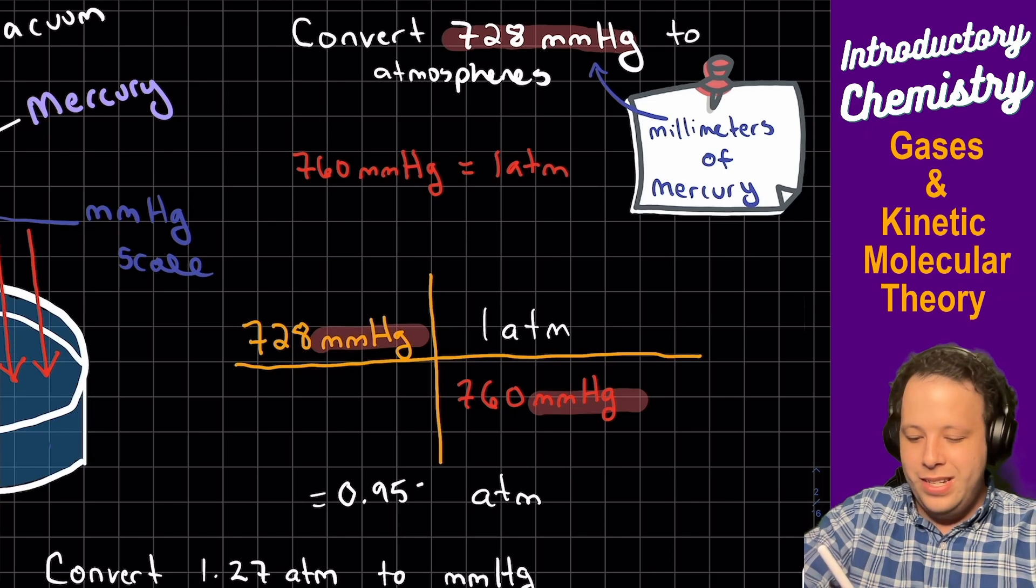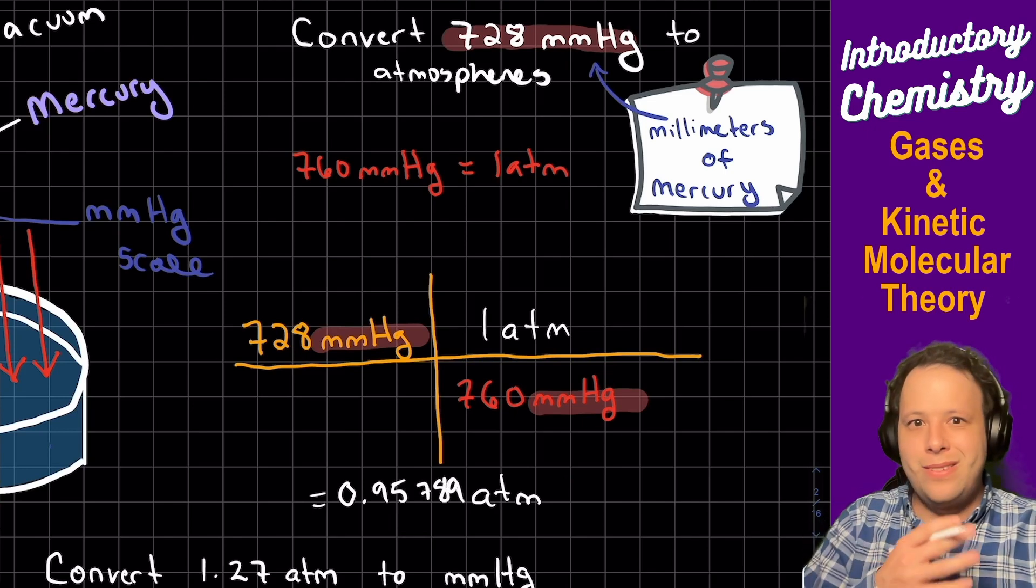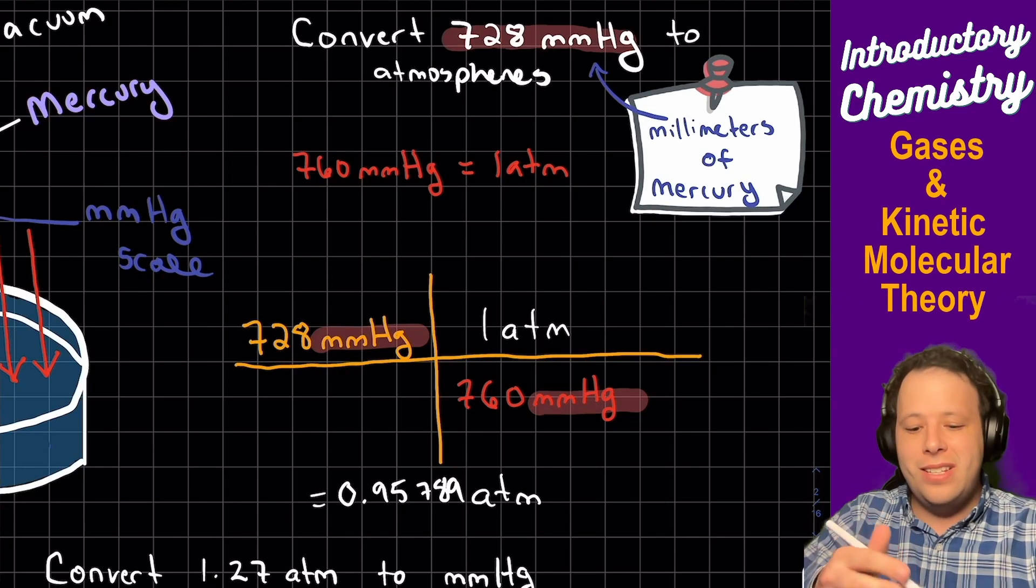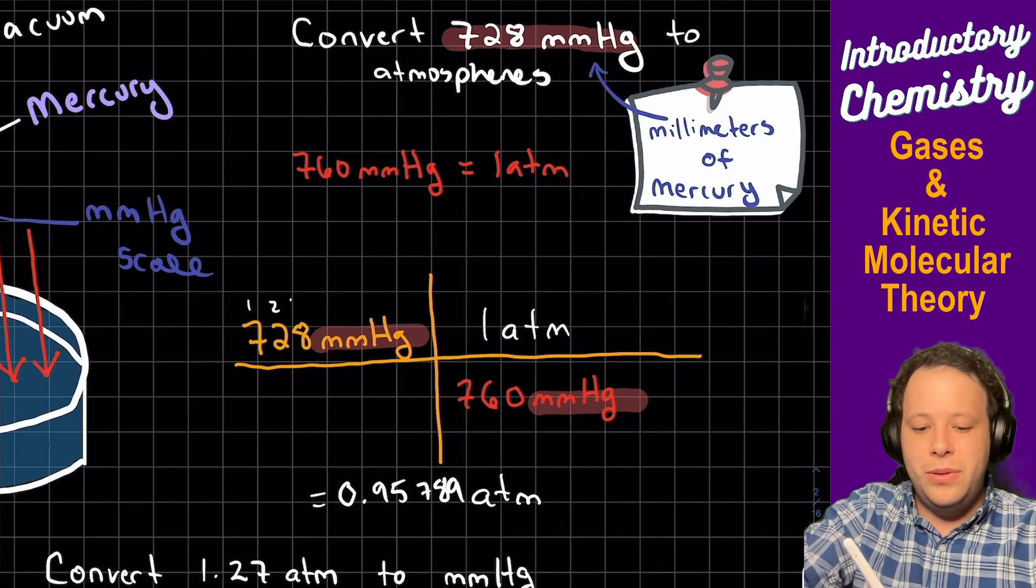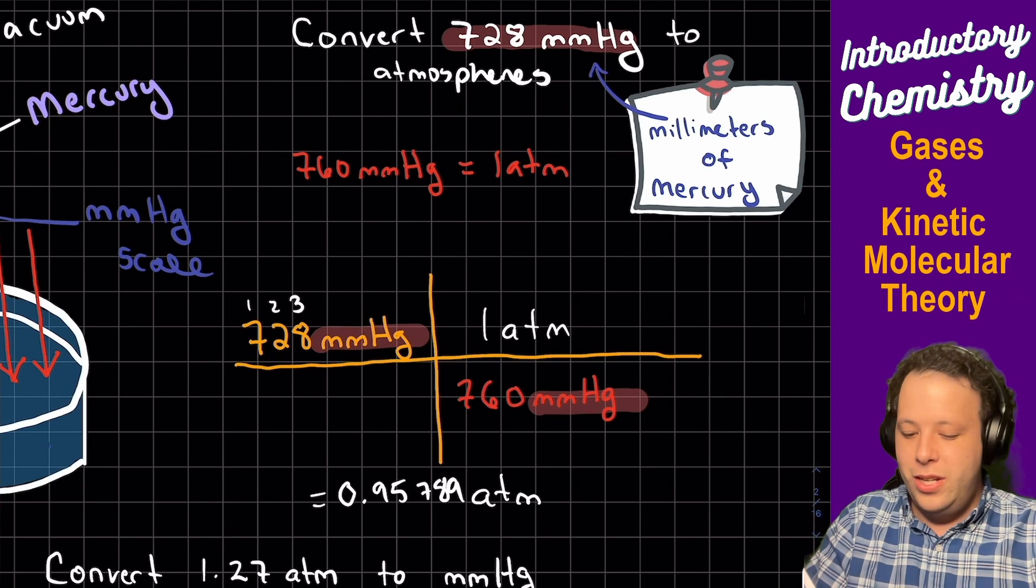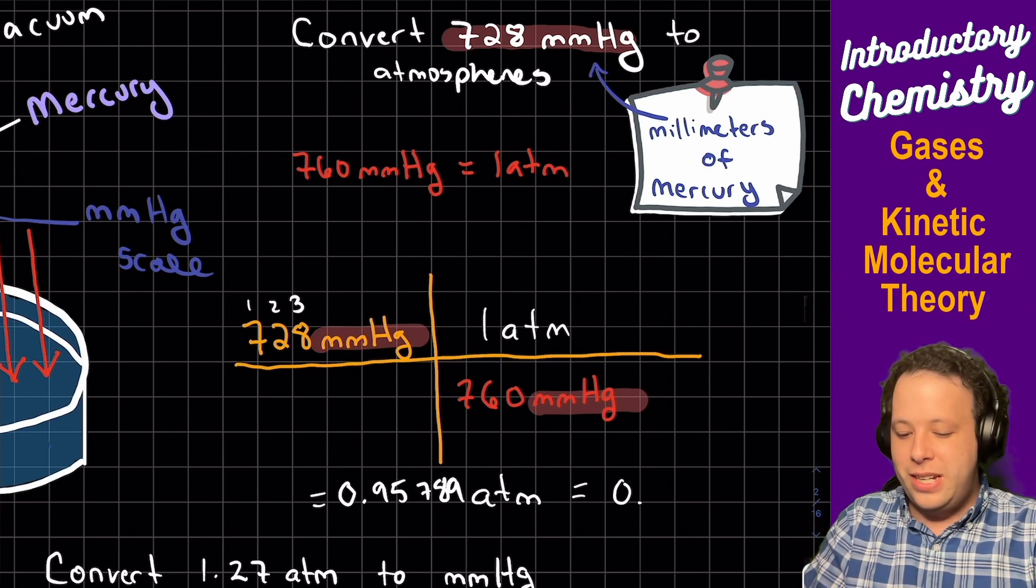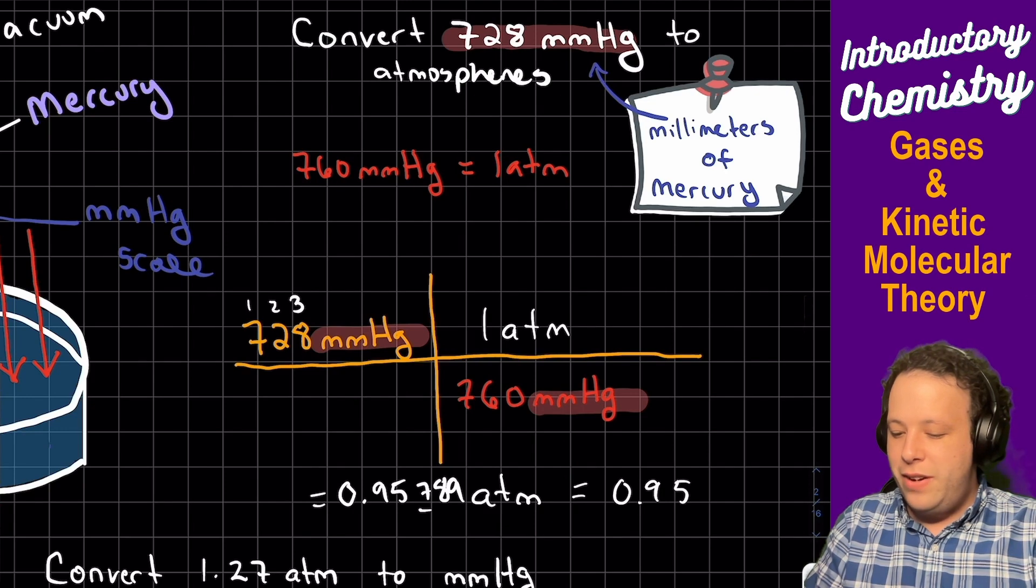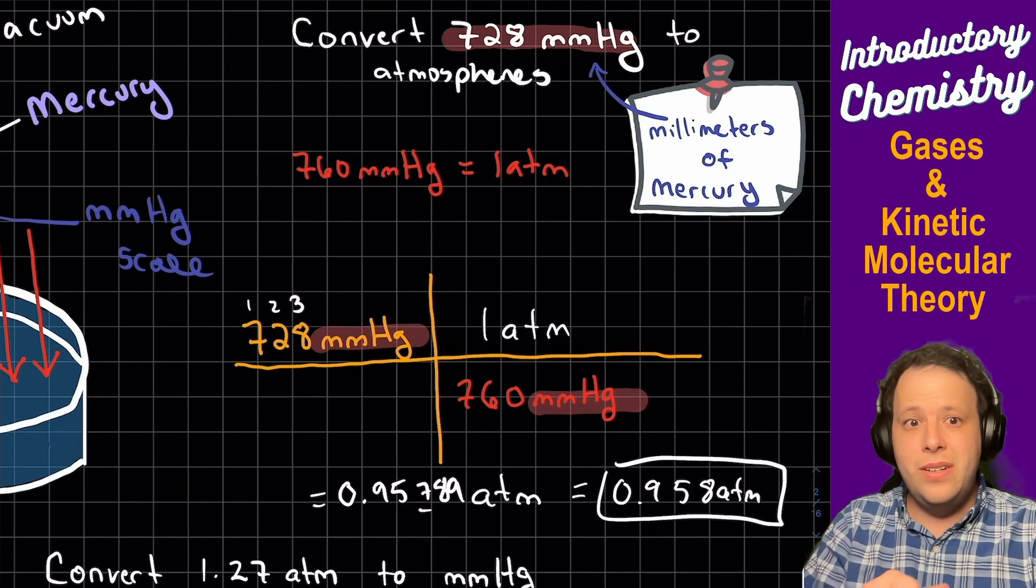And you'll get a pretty big number - you'll get 0.95789. Now is that the right way to show it? Well, we got to count sig figs. So being at this one started with one, two, three sig figs, we got to round it to three sig figs. So we'll round it to the third spot, so it's going to be 0.958 atmospheres, and that's going to be our answer for this one.